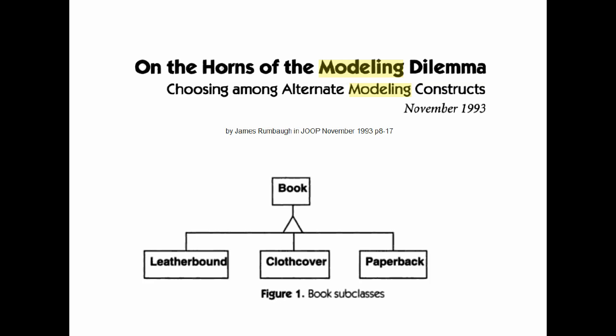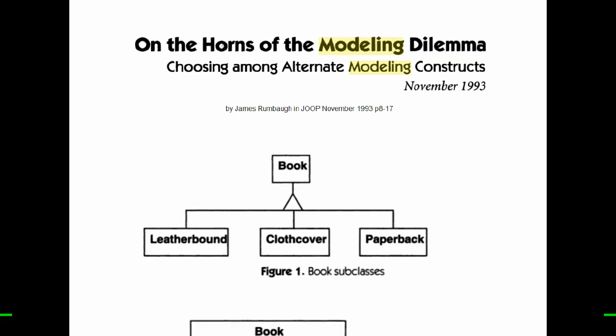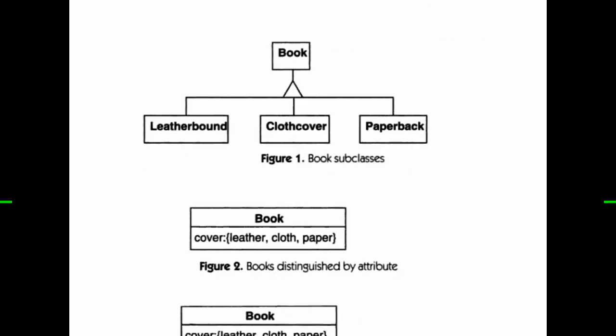Which is leather bound, cloth cover, or paperback. Obviously that's just an enumerated type of cover that you would have, and you wouldn't need those three subtypes.